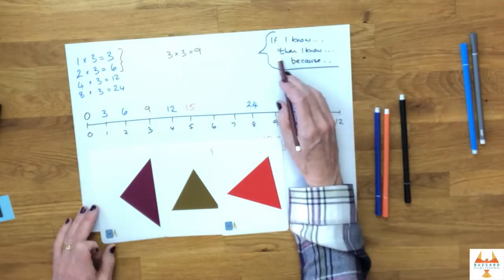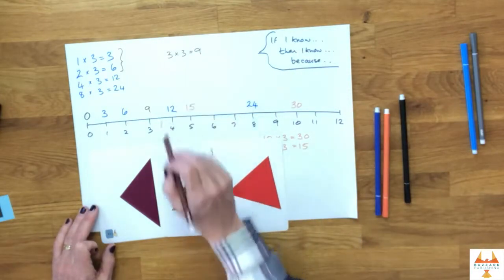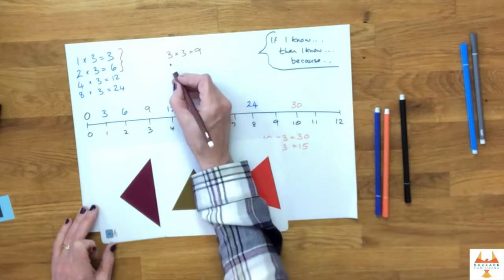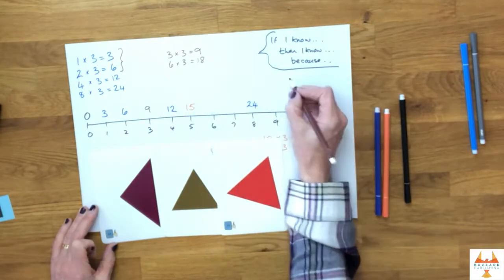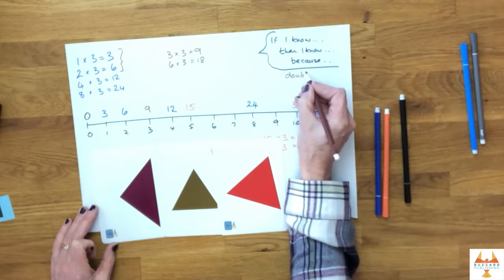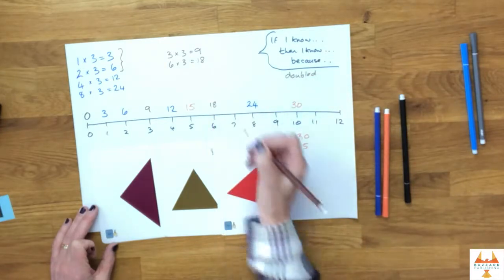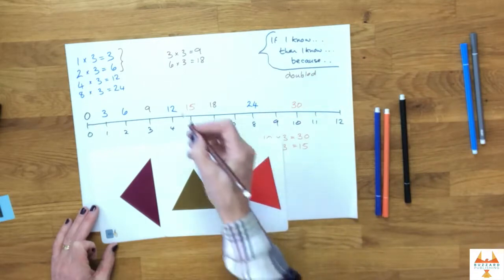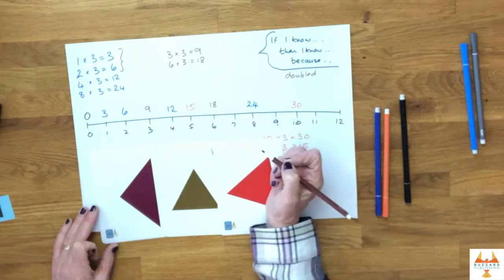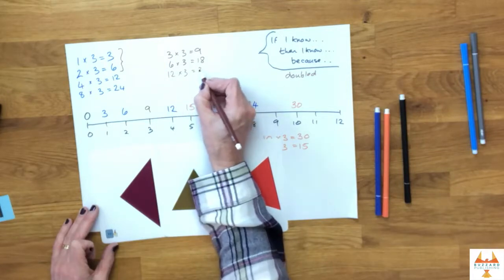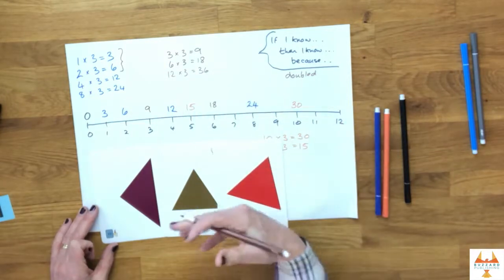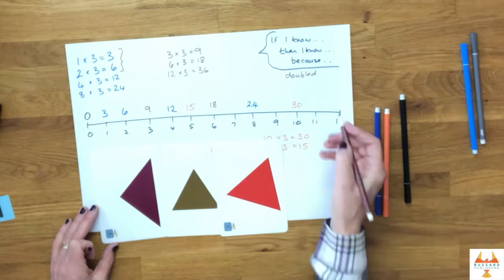I can now go back to my statement here. If I know three times three is nine, then I know six times three is 18 because I've doubled again. So that gives me 18 here. Going again, if I know six threes are 18, then I know 12 threes are 36 because I've got twice as many triangles. So I've got twice as many sides.